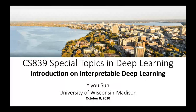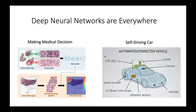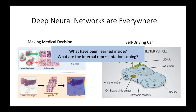Today it's my pleasure to present an introduction on some basic directions and recent works in interpretable deep learning. We all know that neural networks are almost everywhere — they can make medical decisions and they can be used for self-driving cars. But what has been learned inside? What are the internal representations doing? Those are two very important questions to answer in real data.